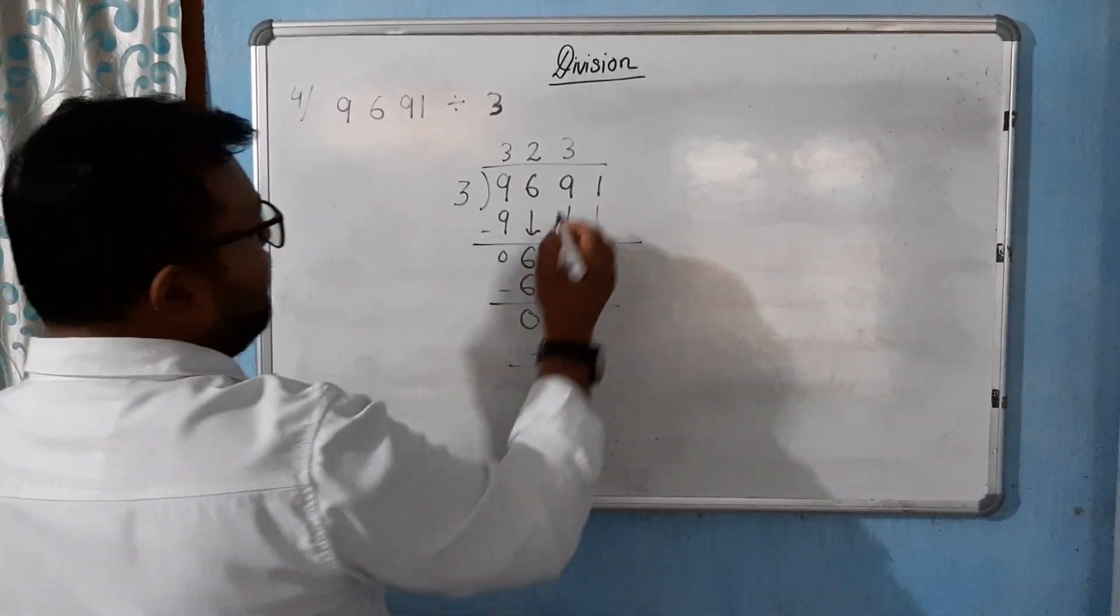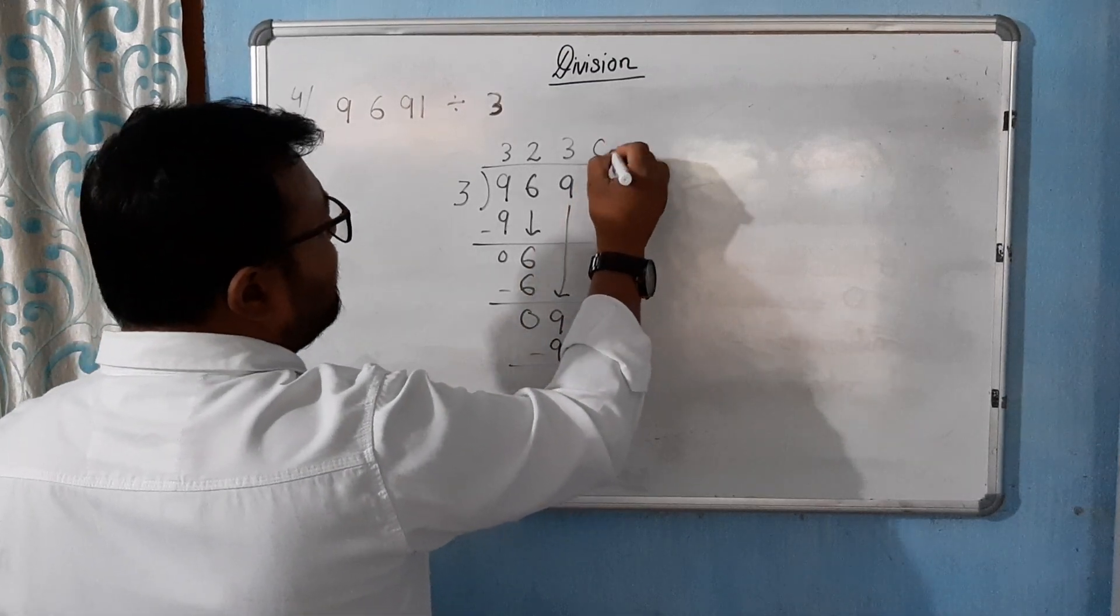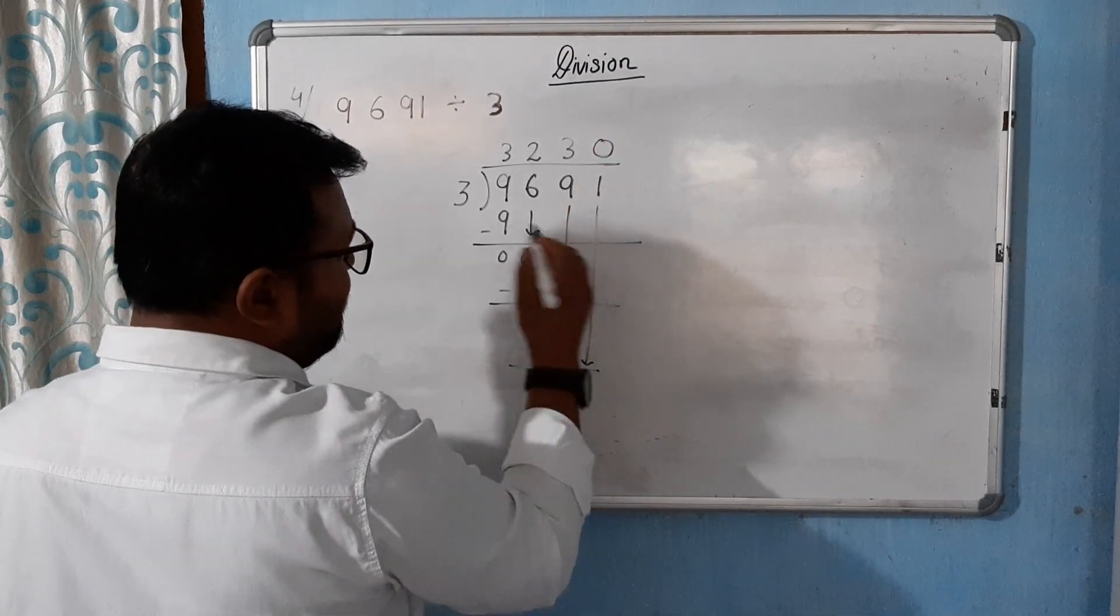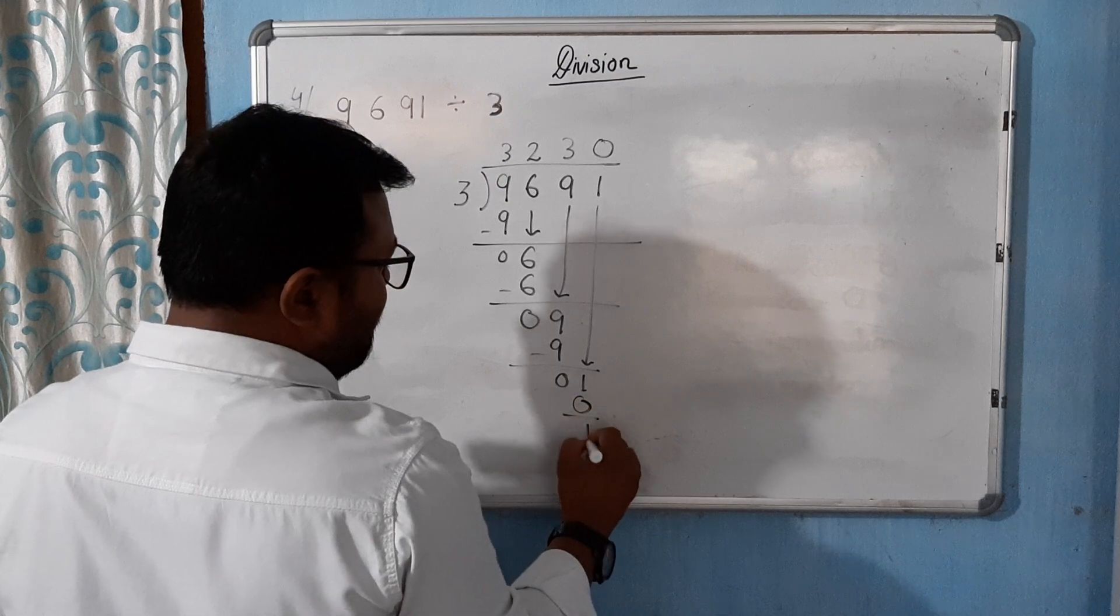Ultimately, this 0 leaves behind me. 3 into 3 is 1, 3 minus 3 is 0. Ultimately, 1. Same thing.